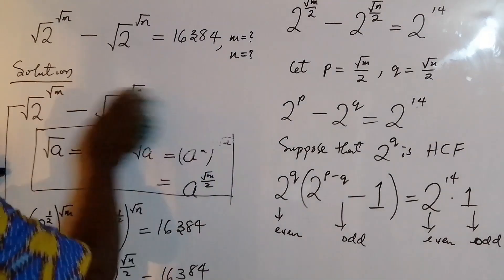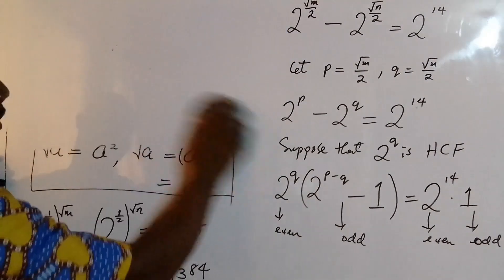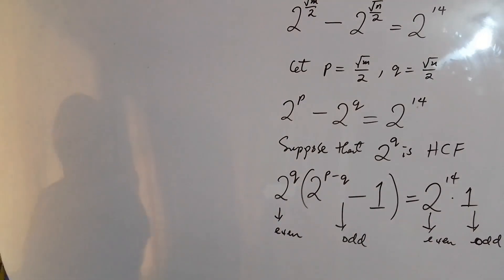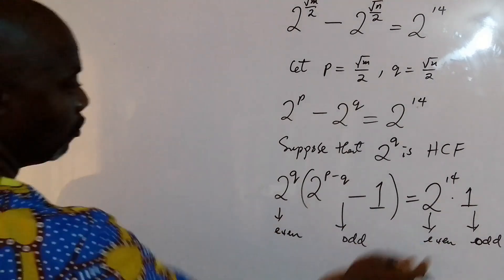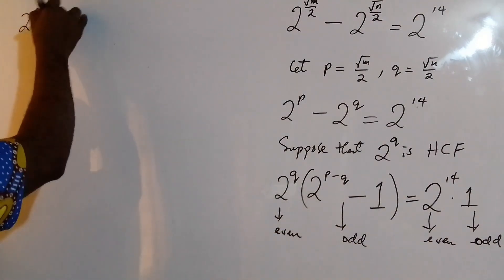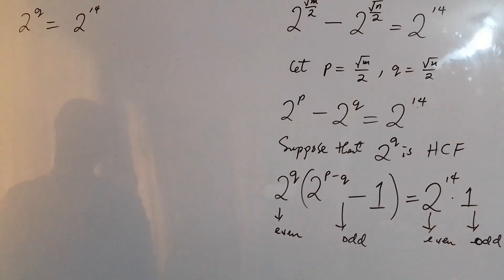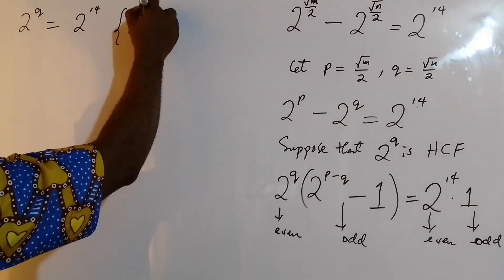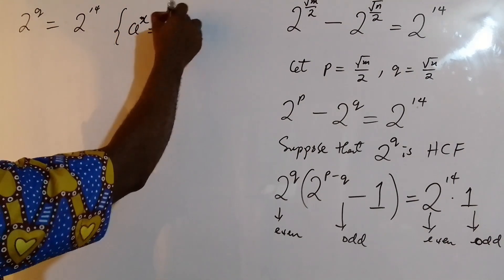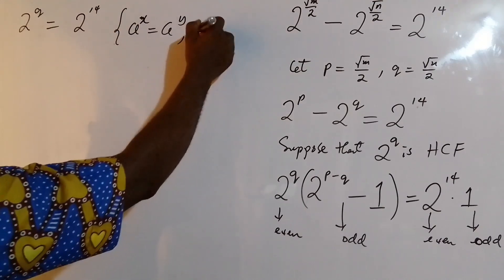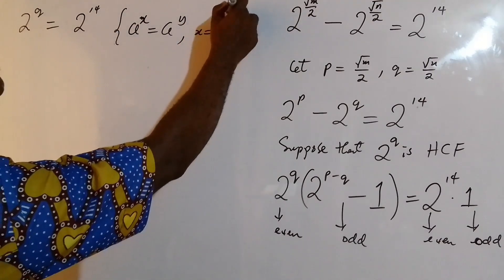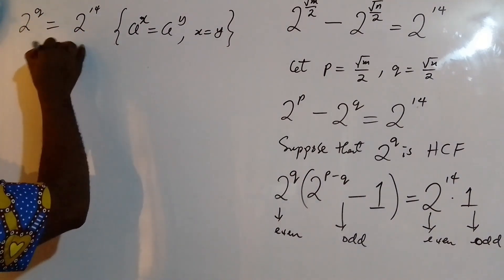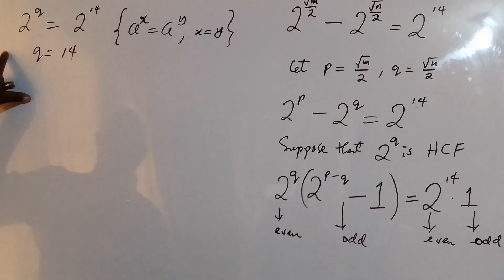Comparing the even parts, we get 2 to the power of q equals 2 to the power of 14. Since the bases are the same, we conclude that q equals 14.